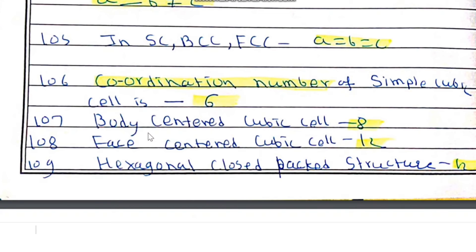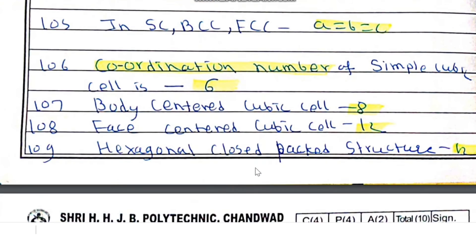The coordination number of a face-centered cubic (FCC) cell is 12, and the coordination number of a hexagonal close-packed (HCP) structure is also 12. This is a very important point to remember.